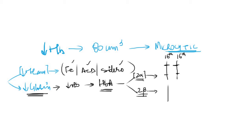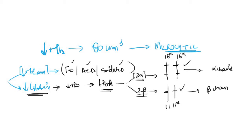Similarly, there are 2 beta genes located on the 11th chromosome, 1 on the paternal side and 1 on the maternal side. So there are 4 alpha genes and 2 beta genes. The alpha genes form the alpha chains, the beta genes form the beta chains, and ultimately they fuse to form HbA. Due to mutation, there occurs decreased production of alpha or beta chains, and as a result the globin chains are reduced and hemoglobin is reduced.